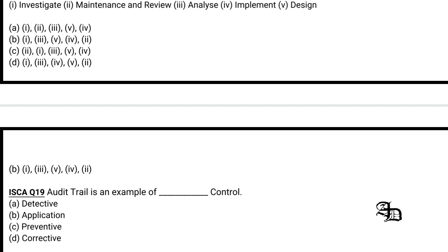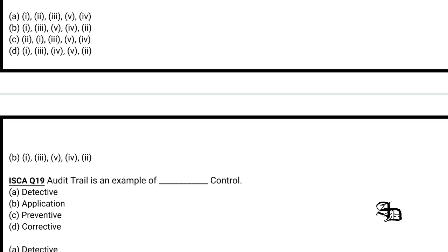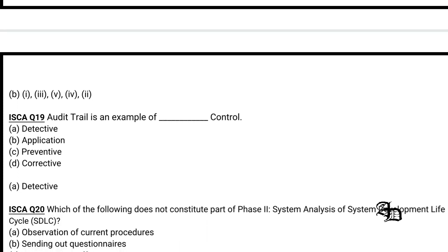Question 7: Audit trail is an example of which type of control — detective control, application control, preventive control, or corrective control? Detective control is the correct answer. Audit trail is an example of detective control, so option A is correct.